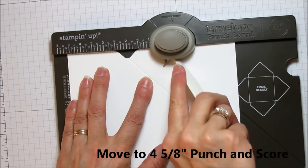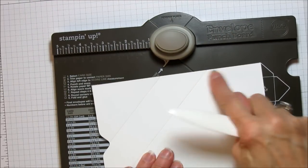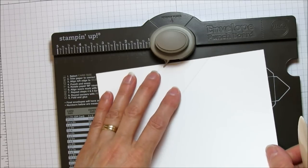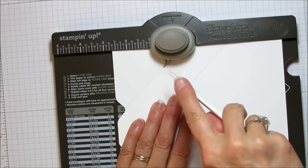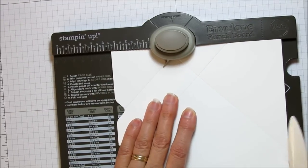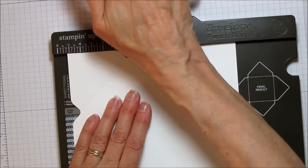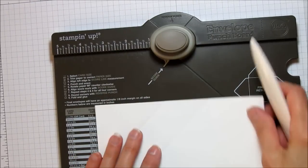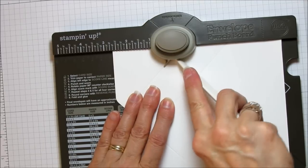Punch it and score it. And then we're going to turn and now we're going to follow these lines. So the first one, line it up with your little point here, punch it, score it, scoot it over to the next line, punch it and score it.